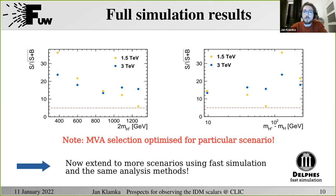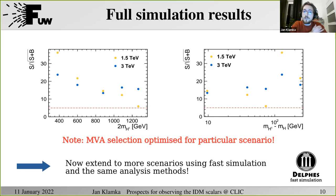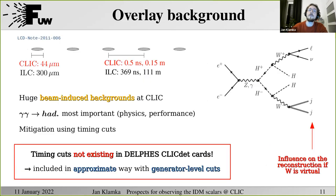The expected significance as a function of the mass of the produced charged IDM scalars and as a function of the scalar mass splittings shows that for all considered scenarios at both energy stages, the IDM scalars could be discovered — the significance is over five sigma. However, the selection was optimized for each particular scenario. We now extend the analysis to the full set of scenarios using fast simulation. An important point is the beam-induced backgrounds at CLIC. Due to very high beam intensity and high bunch collision rate, there are huge beam-induced backgrounds. The most important from the physics perspective are soft gamma-gamma collisions producing hadrons.